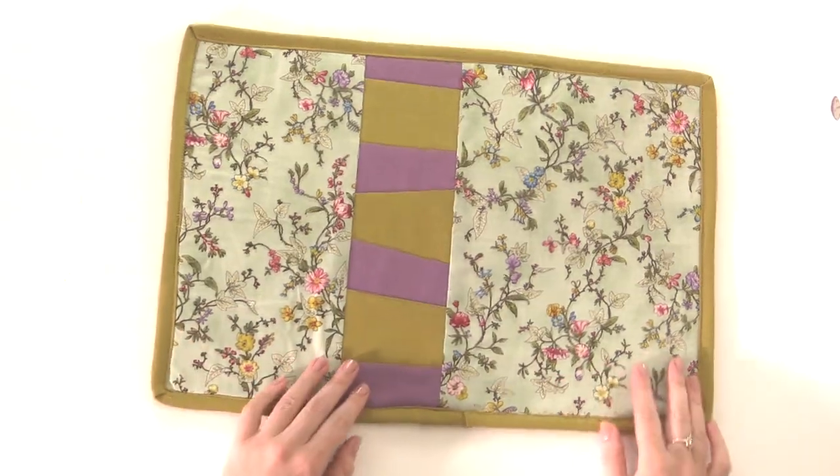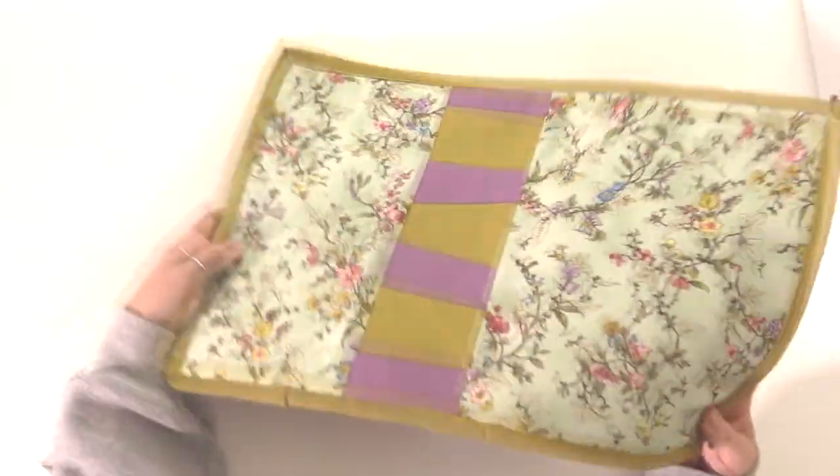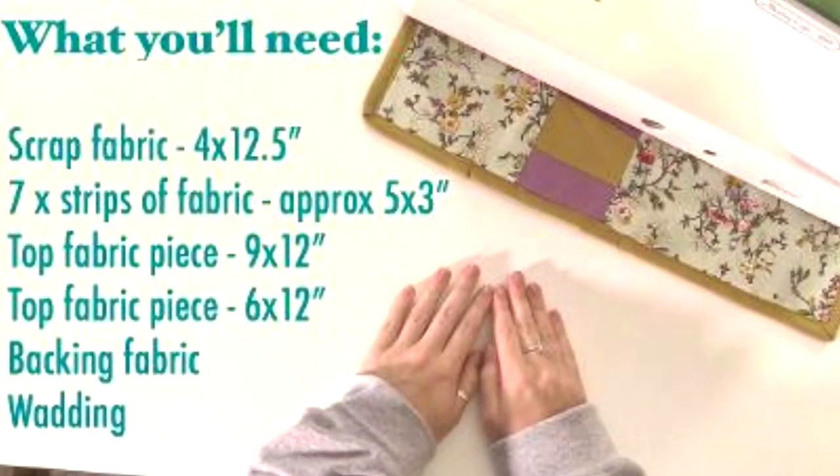In this video I'll show you how I made the sewing machine mat. It has a patchwork panel and matching bias binding around the edge.